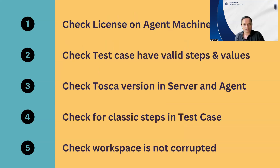First, we can check whether our agent machine has got the correct license configuration — whether it is able to connect to the license server and use one of the available licenses. If it is not able to use any of the required available licenses, then in the logs we will also see errors related to licensing. We need to look at the logs and fix the license issue, either by talking to our administrator or by checking whether the agent machine has the correct license server details and can connect to the license server.